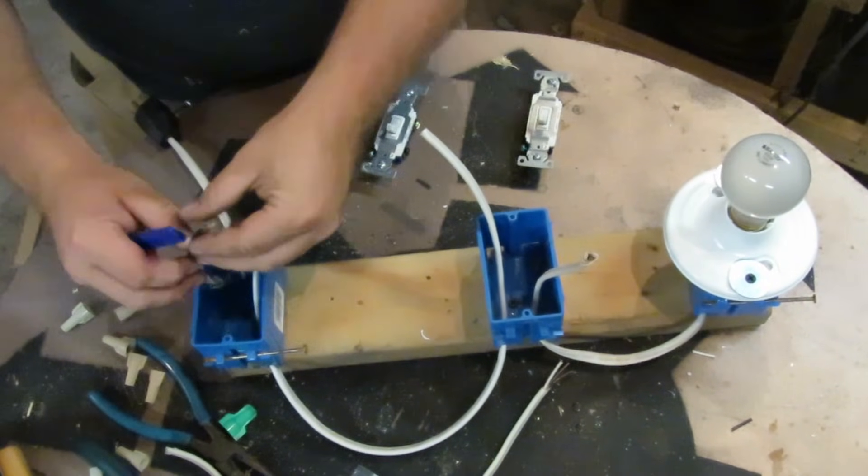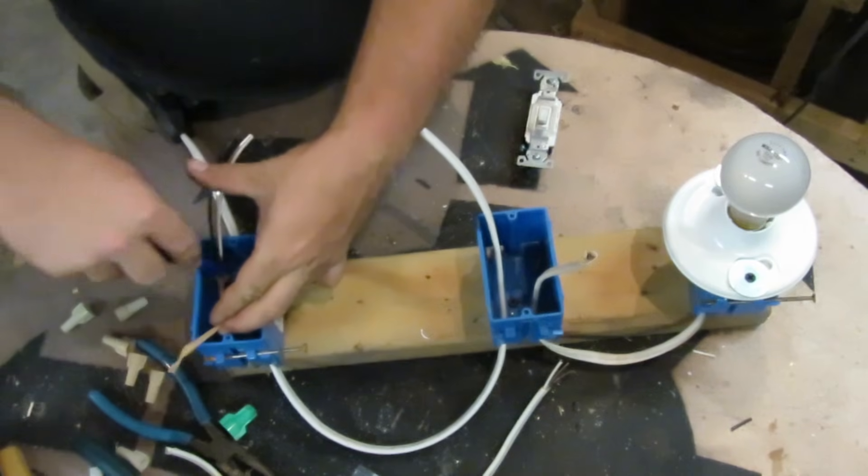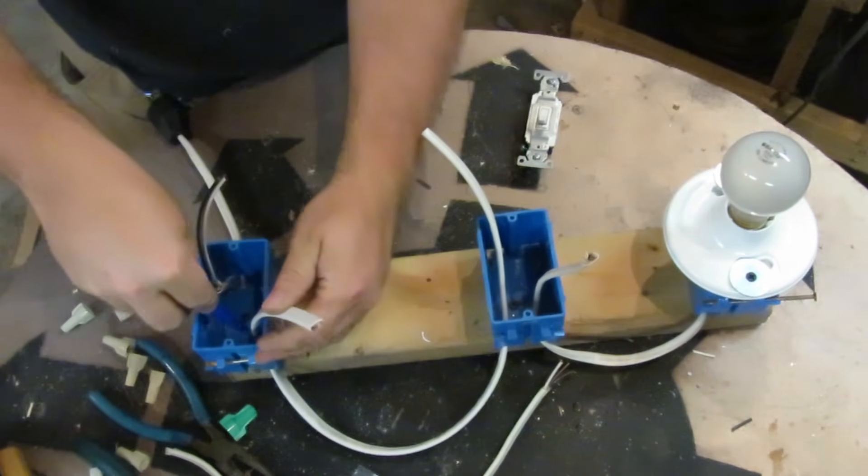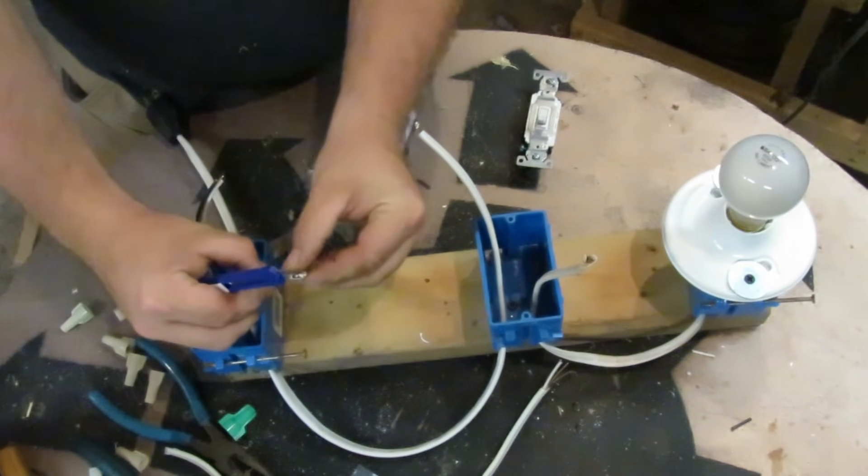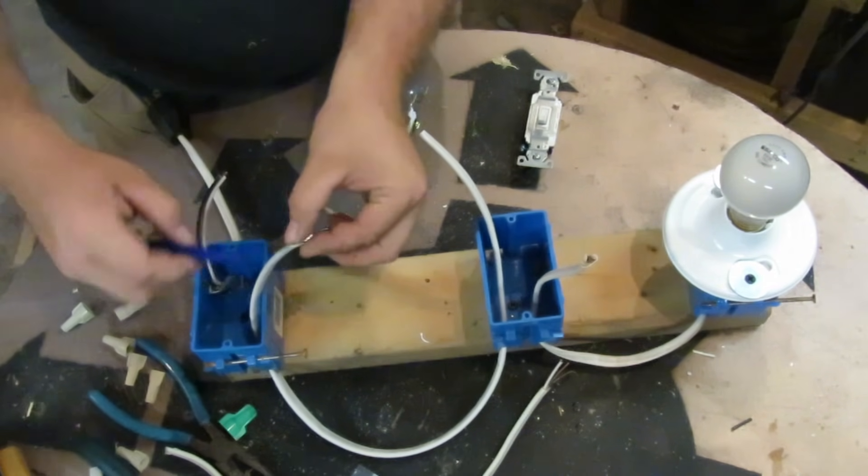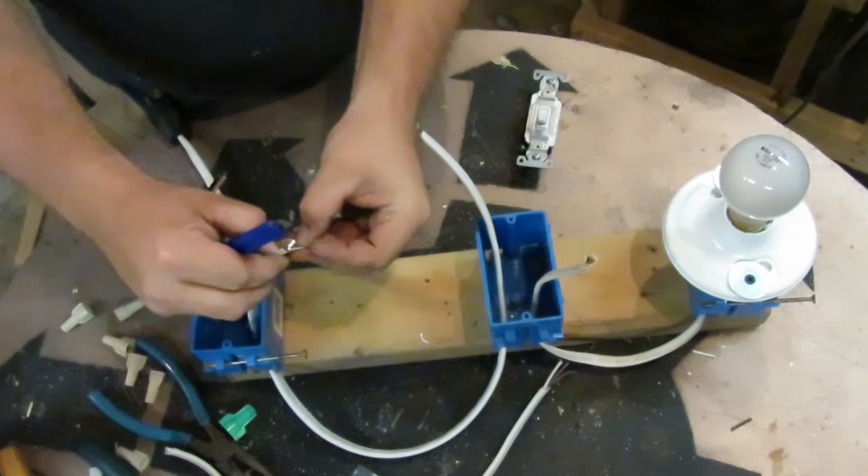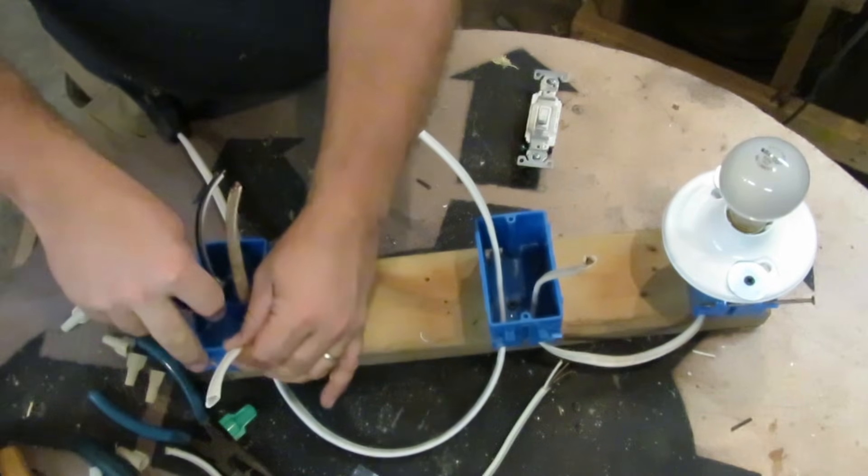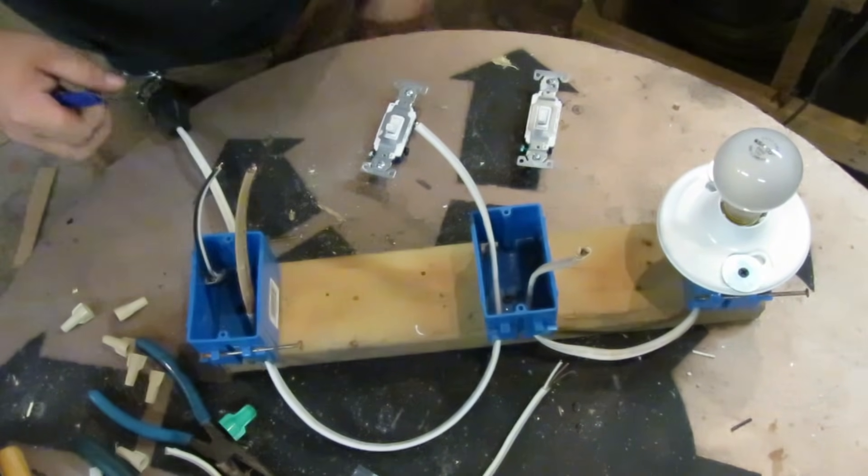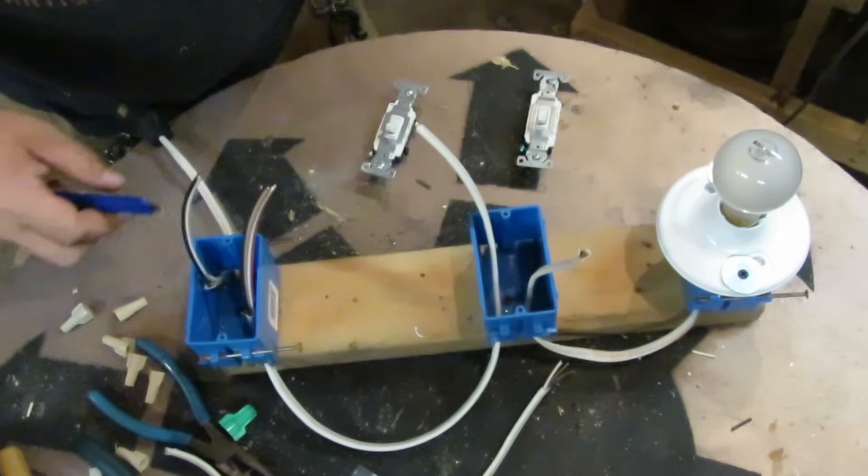And here I am just cutting the coating off of the wires to get them ready, and you just want about six inches in the box of each wire.